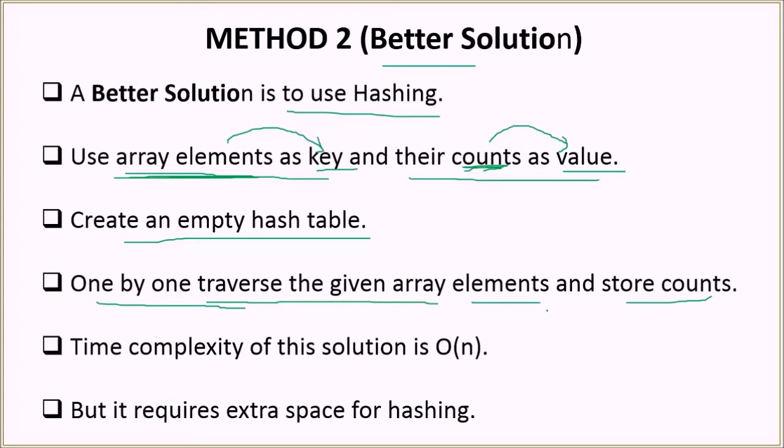And you basically store the counts by traversing it. Starting from the first element to the last element, you will first check if the element is already a key in the hash table. If it's not, you will enter it. If it's there already, you will just increase the count value there. So the time complexity of this solution will be order of n, as opposed to the previous solution where we were using two loops and thus the time complexity was order of n squared. But there is an overhead here that it requires extra space for hashing. And so it is still better than solution one, but still it requires some extra space.